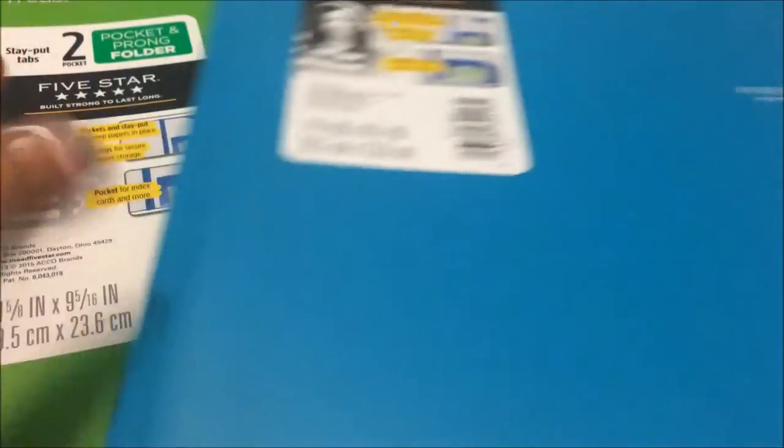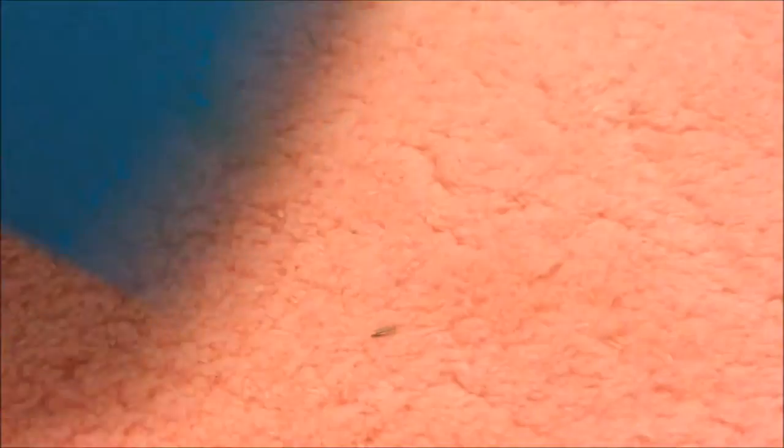I also got two folders to put any extra papers, maybe my homework. I just got a teal and a lime green. Next I got 24 dividers, eight for each binder, so I can divide all of my papers and stuff like that.